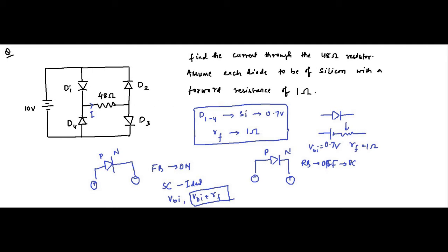The next thing is to determine which diodes are forward biased and which diodes are reverse biased. For diode D1, the P end is connected to positive and the N end is connected to negative, so this is forward biased. D2 has the N end connected to positive and P end connected to negative, which means it is reverse biased. D4 has P end connected to negative and N end connected to positive — reverse biased.